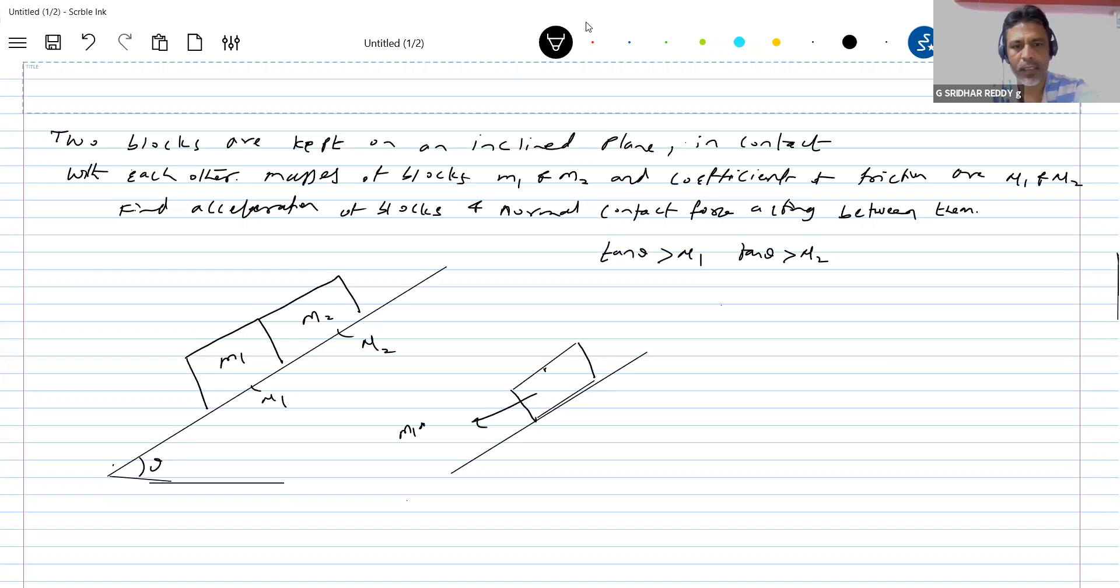Here M1g sin theta. The first block, second block will push on it. So let me show that the reaction. Let me call R and the friction here. Let me have the normal contact. This is N1 and this is M1g cos theta.